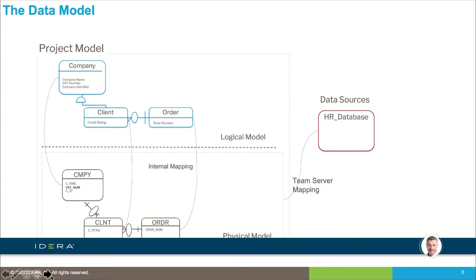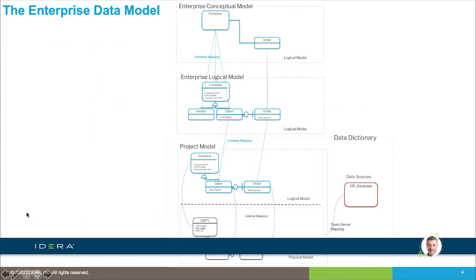We might end up with many project models across many different data assets, so we need to produce a model of each of them. The enterprise data model gives us extra parts: at the bottom we have a number of those project models, and at the top we have a single representation of the information of the organization that is mapped to all of those multiple project models.